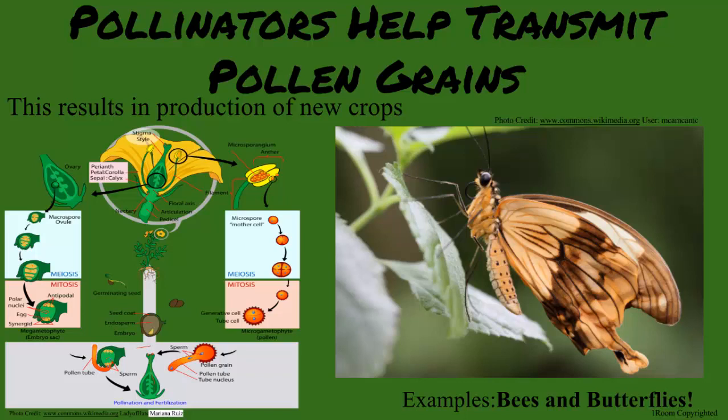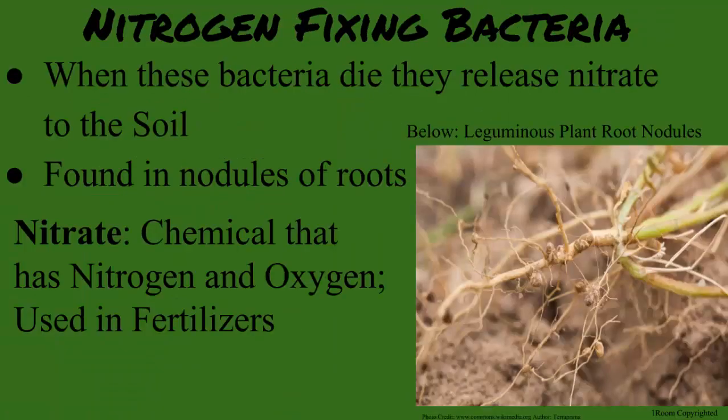Any other ones before we're done? Just one last one — nitrogen-fixing bacteria. These are useful bacteria that are found in the roots of the plant. They convert nitrogen from the air into nitrates. When the bacteria dies, the nitrate is released into the soil and helps make the soil more fertile and ready for the next season.